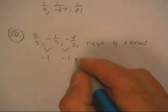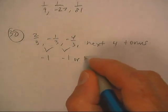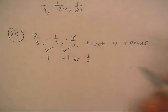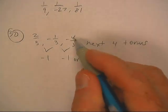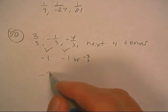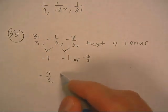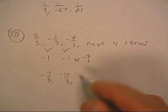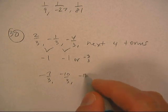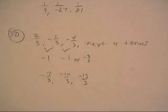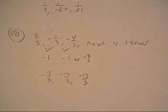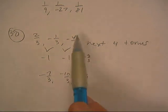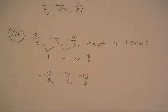So down one would be the same as negative three over three. So the next one's going to be negative seven-thirds. Drop three again: negative ten-thirds. Drop three again: negative thirteen-thirds. We just keep dropping — drop the numerator by three every time, and you'll be okay on that.